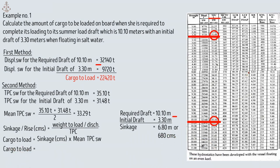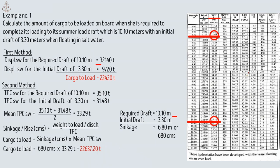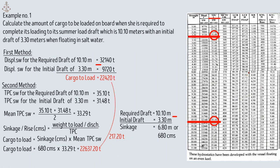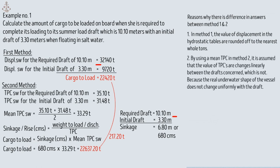Cargo to load equals 680 centimeters times mean TPC of 33.29 tons, giving 22,637.20 tons. As we can see, there is a difference of 217.20 tons between Method 1 and Method 2. This is because in Method 1, displacement values are rounded to the nearest whole ton. In Method 2, using mean TPC assumes TPC values change linearly between drafts, which they do not.